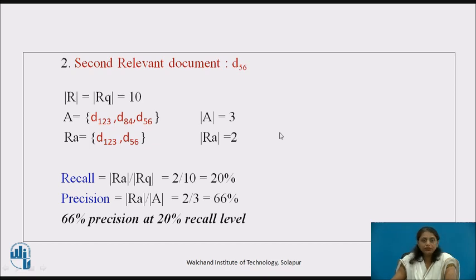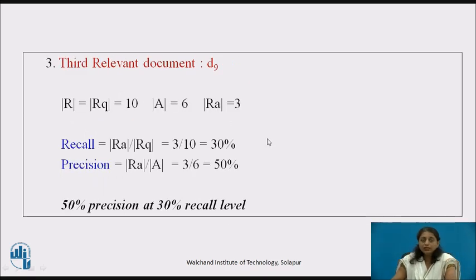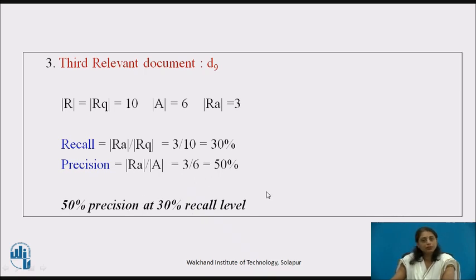The second relevant document is D56. Up to D56 we have received 3 documents in the answer set, of which 2 are relevant. So recall = 2/10 = 20% and precision = 2/3 ≈ 66%. That is 66% precision at 20% recall level. The third relevant document is D9. Up to D9 we have 6 documents in the answer set, of which 3 are relevant. Recall = 3/10 = 30% and precision = 3/6 = 50%. So 50% precision at 30% recall level.